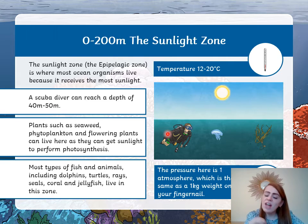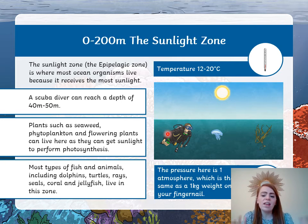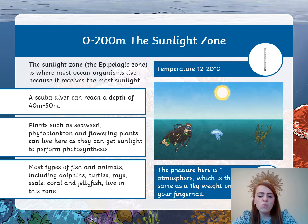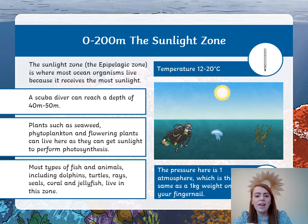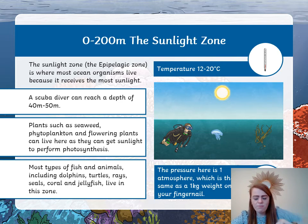Most types of fish and animals, including dolphins, turtles, rays, seals, coral, and jellyfish, live in this zone. So all the species that we know about really live in this sunlight zone. The pressure here is one atmosphere, which is the same as one kilogram of weight on your fingernail. As you go down deeper, the pressure starts to get stronger. So this is the sunlight zone — the first one.